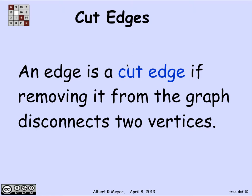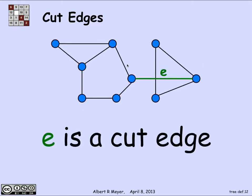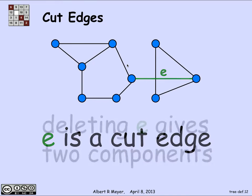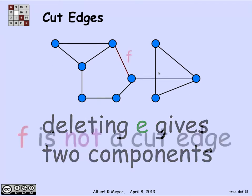An edge in a simple graph is called a cut edge if, when you remove it from the graph, two vertices that used to be connected — that is, used to have a path between them — cease to have a path between them. Here's a simple graph illustration: edge E is a cut edge because if I delete it then there are now two components. Any of the vertices on one side used to be connected to any of the vertices on the other side via that edge, but once I've deleted it they no longer are, so that makes E a cut edge.